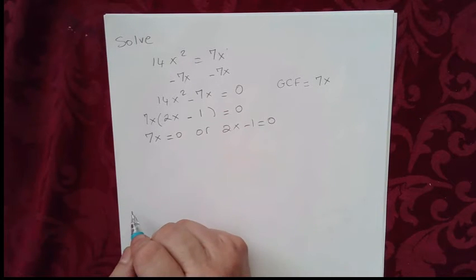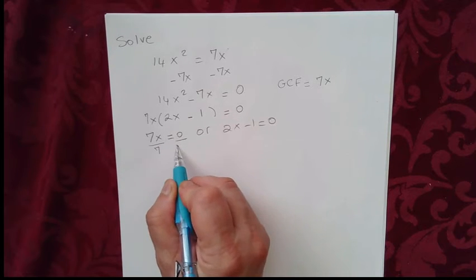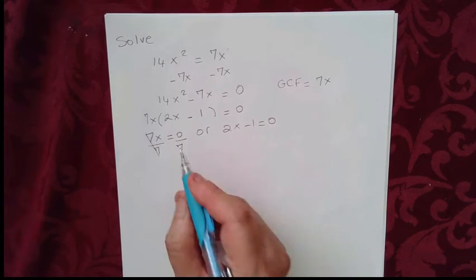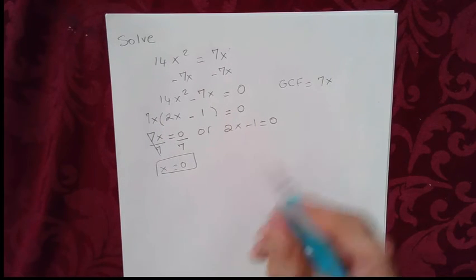Now 7x equal to 0, x must be 0. Or if you like, you can divide both sides of the equation by 7. So we will be left with x equals 0 divided by 7 is 0. That is one solution.